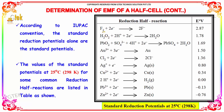The reduction half reactions listed include fluorine, hydrogen peroxide, gold, silver, and hydrogen, each with their corresponding standard reduction potential values in volts.